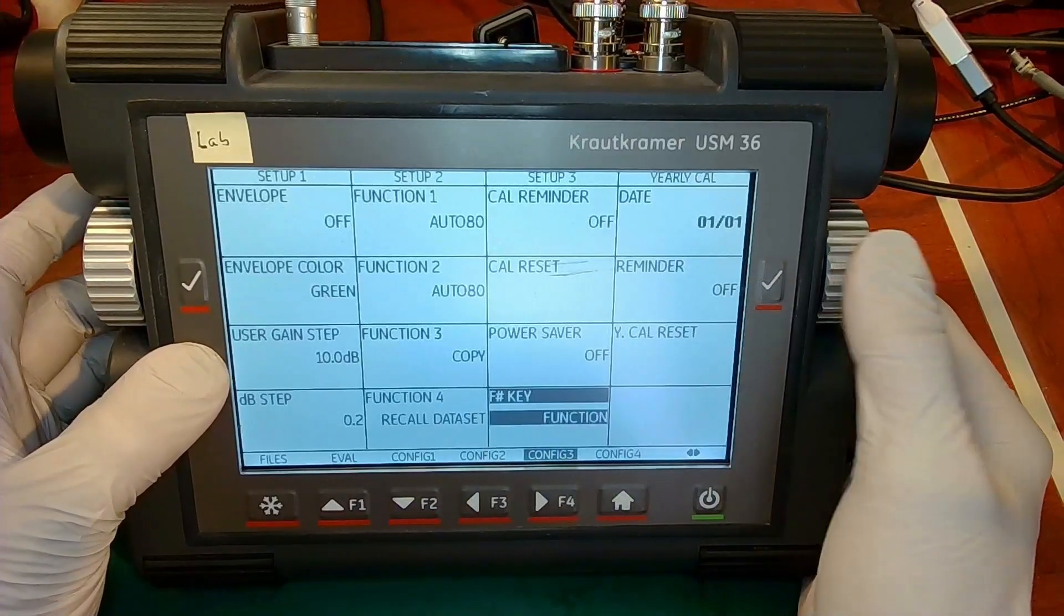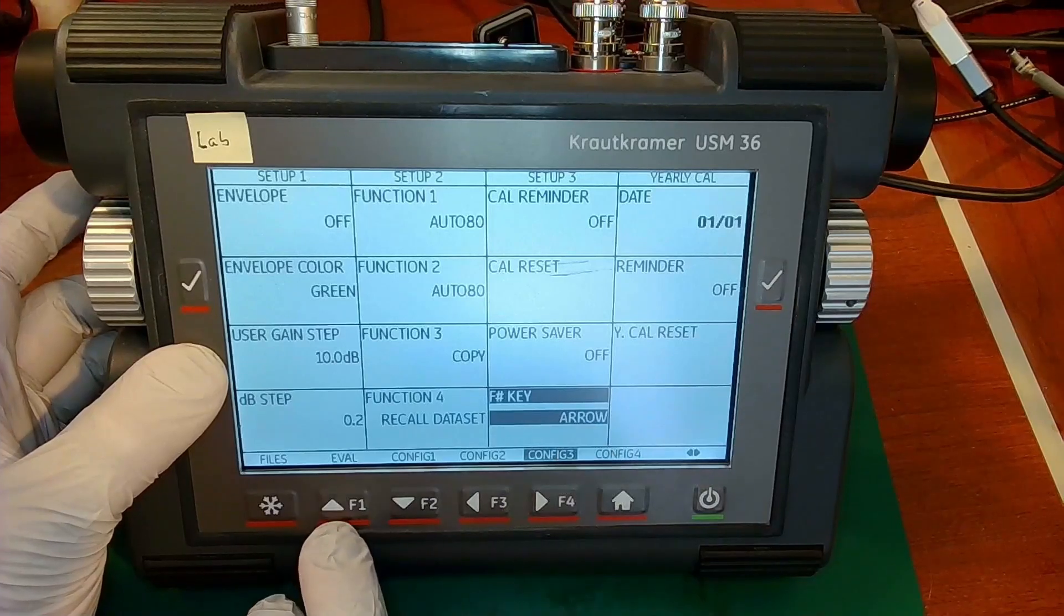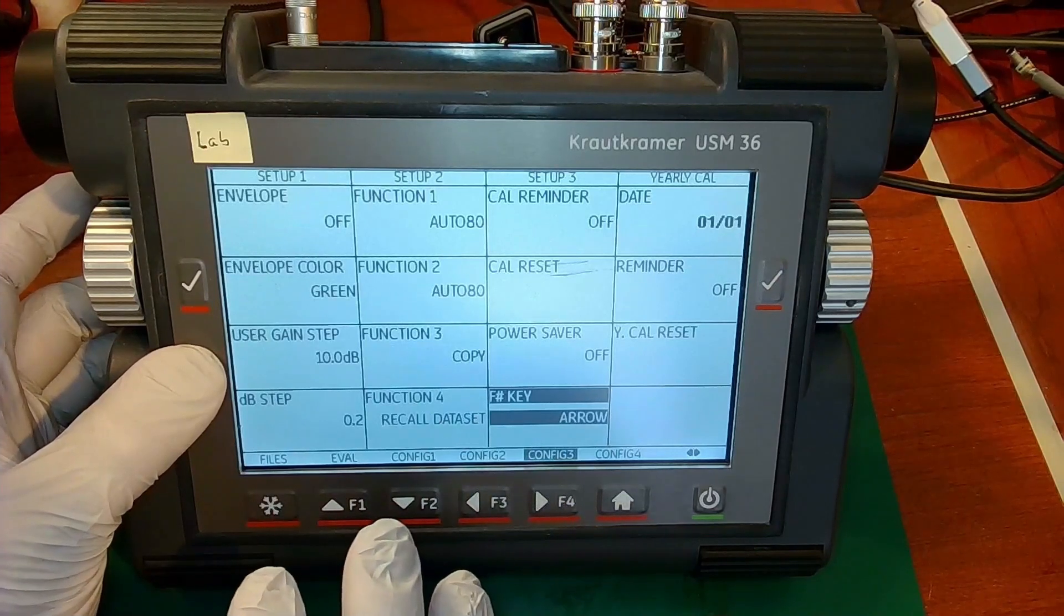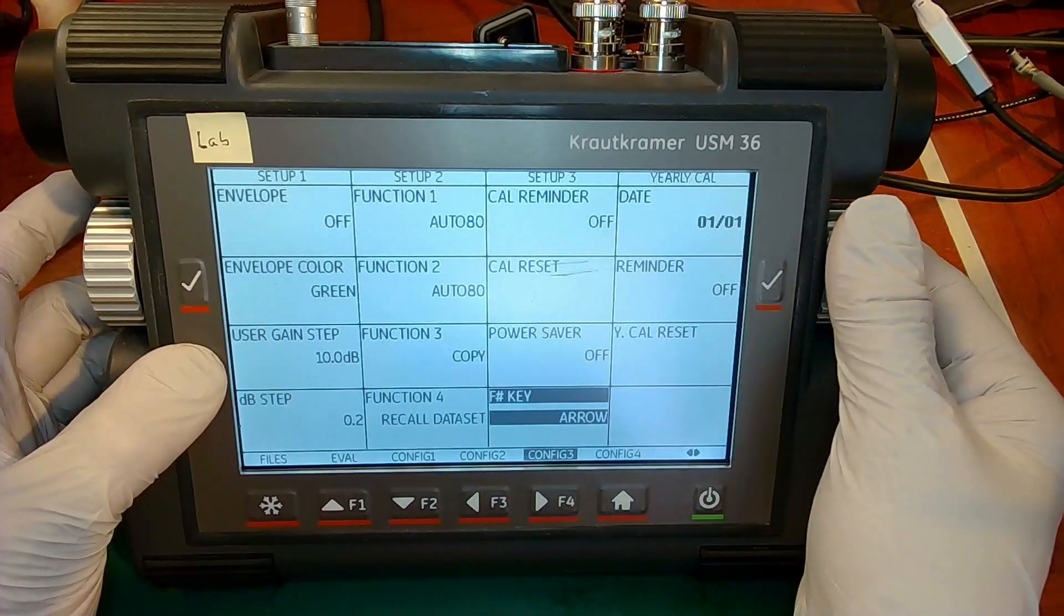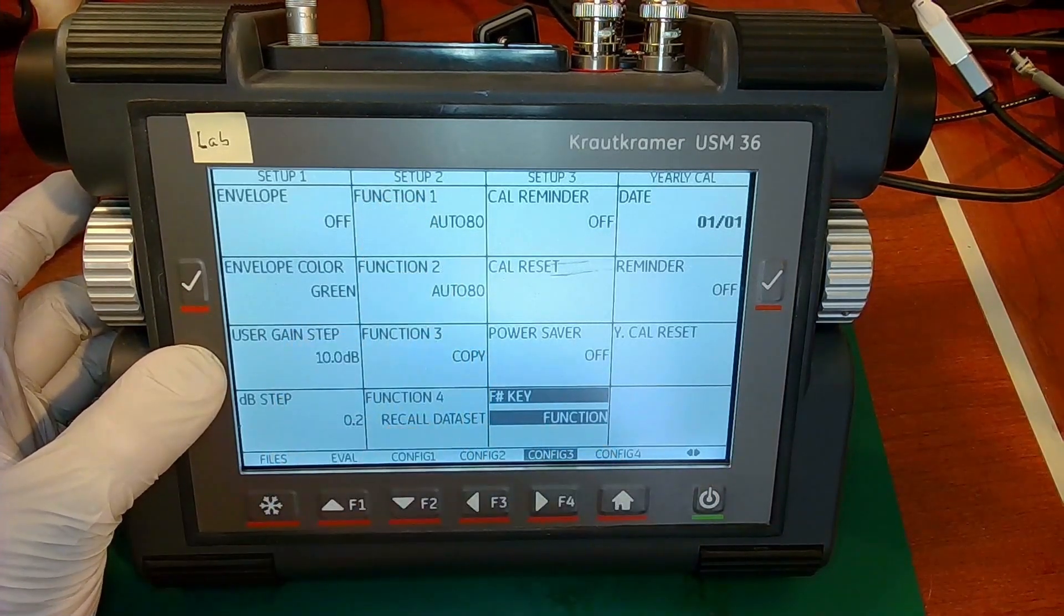And you have a choice of those being either functions or arrows. If you set this to arrows, this will be up, down, left, right in terms of movement around the menus and so on. If you have them set to function, the key will perform whatever function you have selected here on this menu.